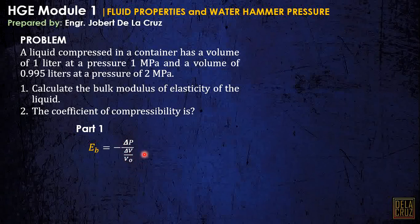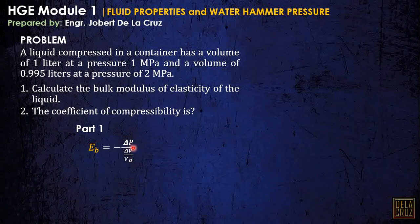We can relate this from the topic of strength of materials — Hooke's law. If we cross multiply this term, the strain can be related as stress equals E times strain — that's Hooke's law. But here, we consider the volumetric strain. In Hooke's law, we commonly consider the axial strain.